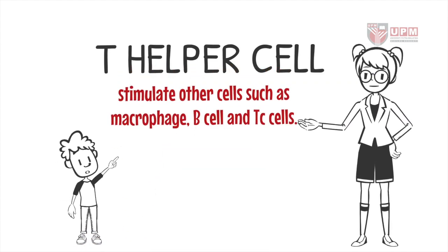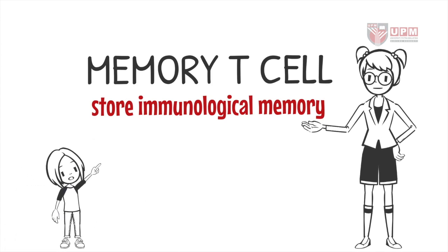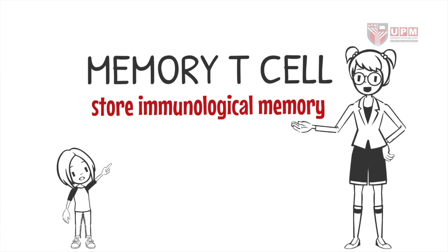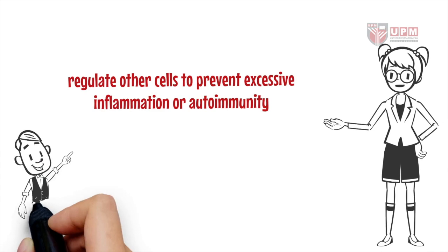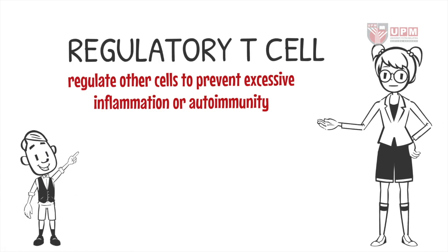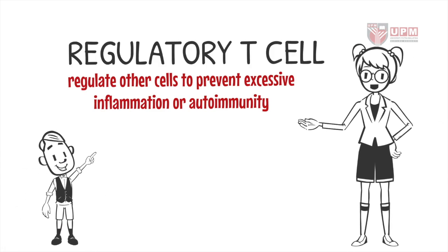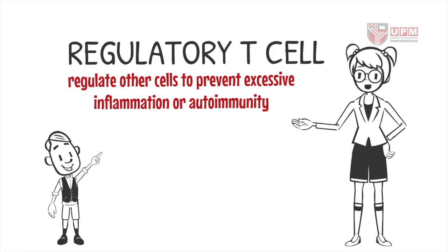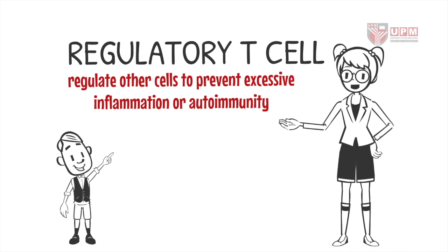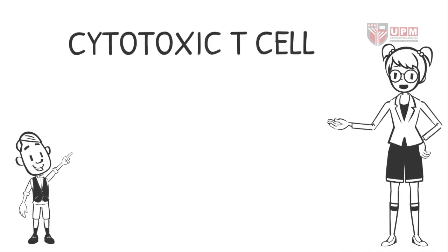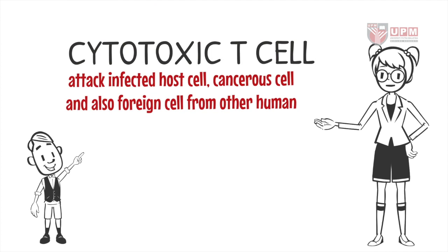T-helper cells function to stimulate other cells such as macrophages, B cells, and cytotoxic T cells. Memory T cells function to store immunological memory. Regulatory T cells serve to regulate other cells to prevent excessive inflammation or autoimmunity.